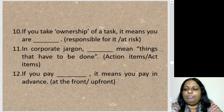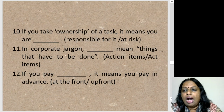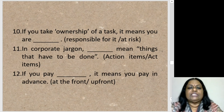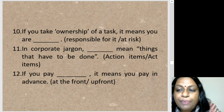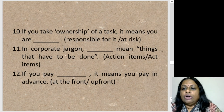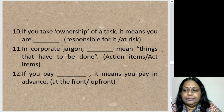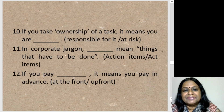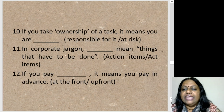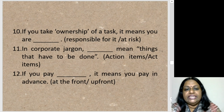Sentence ten: 'If you take ownership of a task, it means you are blank.' Responsible for it or at risk? Responsible for it — you have owned the task and taken responsibility. Sentence eleven: 'In corporate jargon, blank means things that have to be done.' The options are 'action items' or 'act items.' Action items — in corporate jargon, action items means things that have to be done, so action has to be taken on these things.